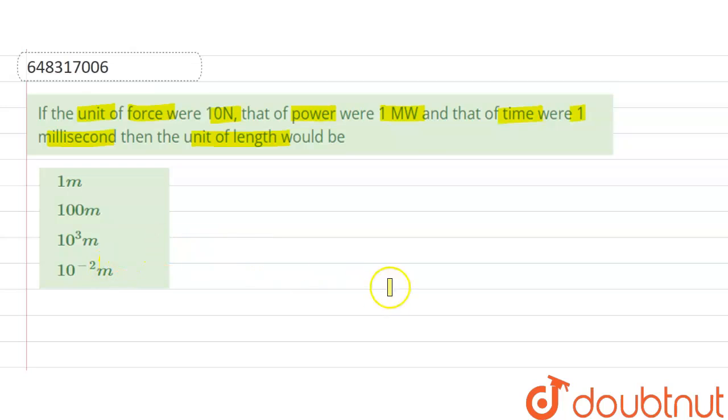Now we know that power is given by P equals force times velocity. That is, we can write this as force times distance upon time, or this can be written as length. So this is equal to F times L upon T. P equals F times L upon T.